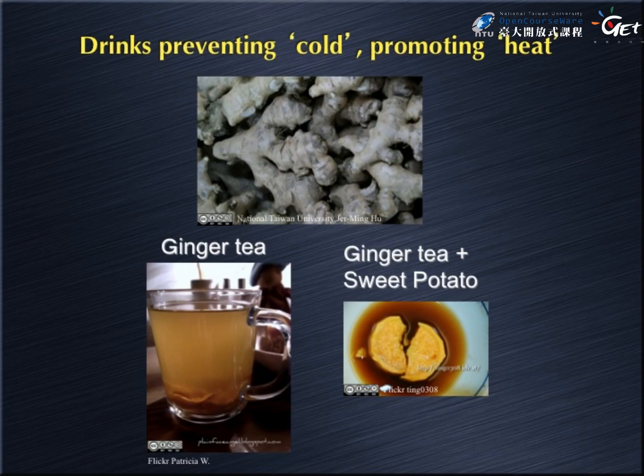So we've had several examples of cold-property drinks. Now I'll talk about drinks that prevent cold and promote heat — typically popular in winter or for people with cold bodies. The most famous is ginger tea. Ginger has a warm or hot property, so you can drink ginger soup or combine ginger with something like sweet potato. It's quite nice to have during winter — not only does the temperature warm you up, but the warm property heats you from the interior.